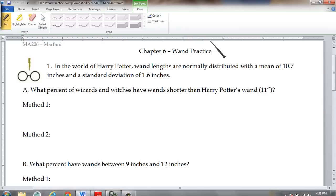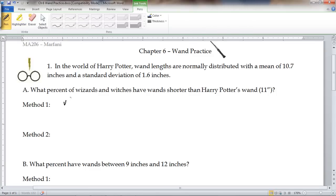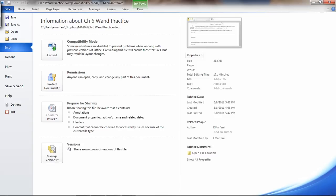First question is, what percent of wizards and witches have wands shorter than Harry Potter's wand, whose wand is 11 inches? And we know that wands are normally distributed with a mean of 10.7 and a standard deviation of 1.6.